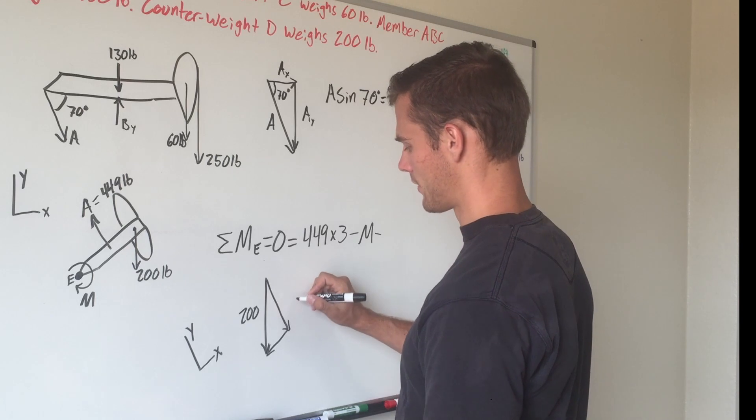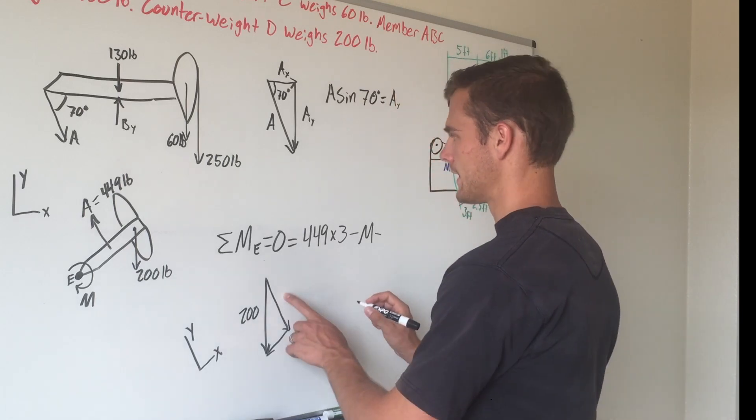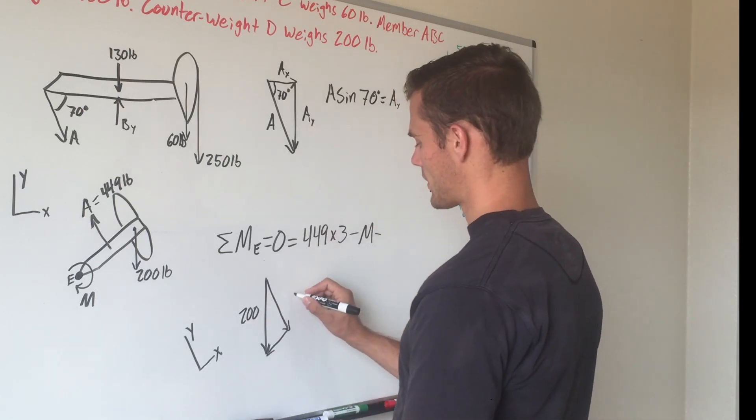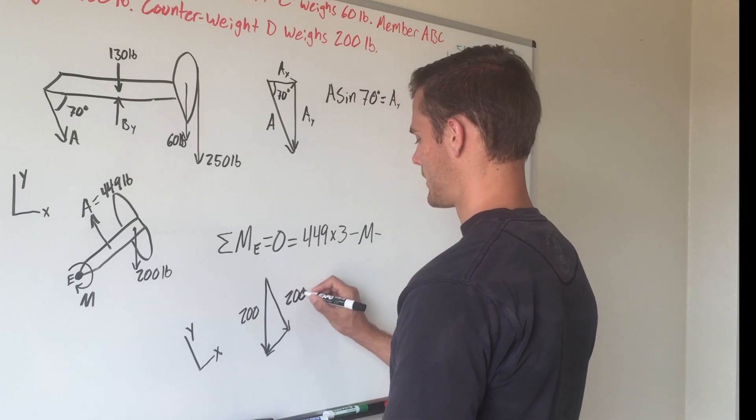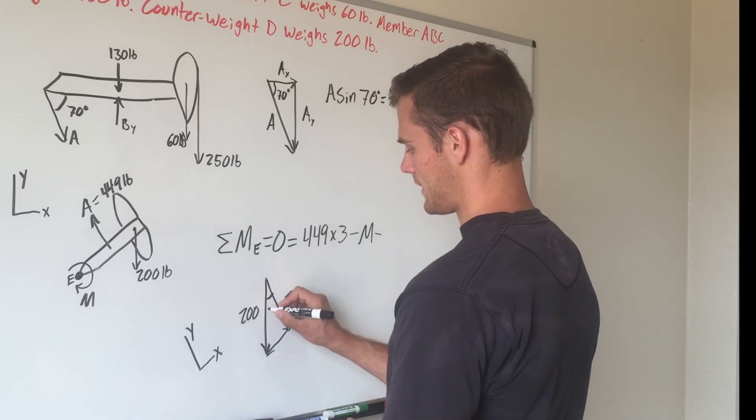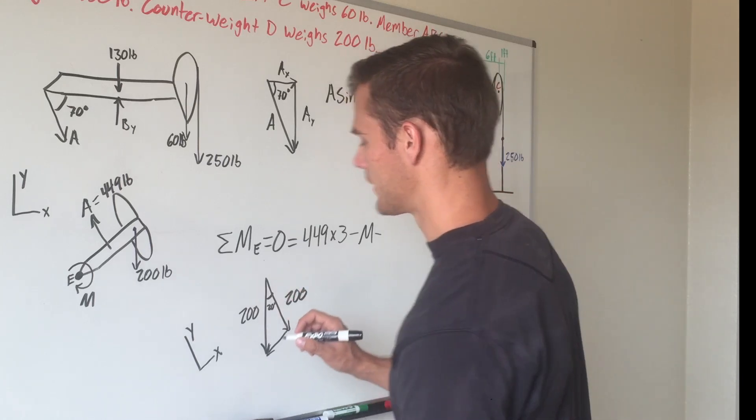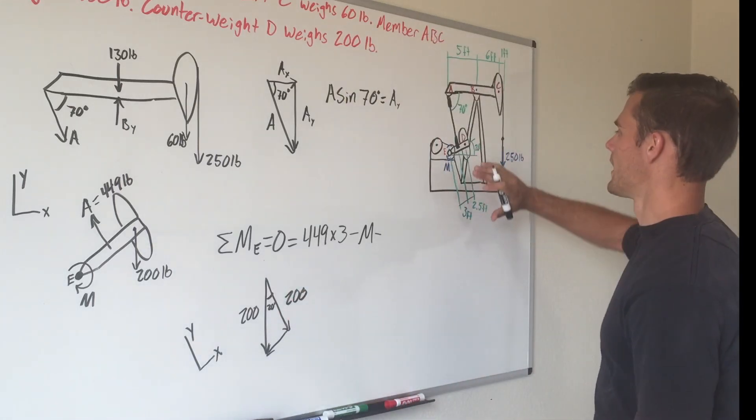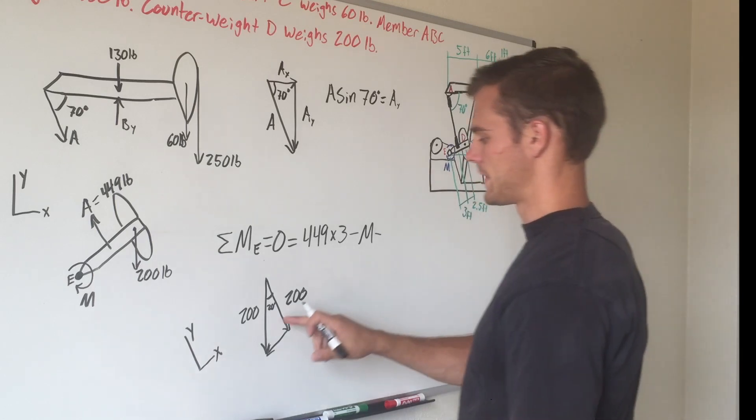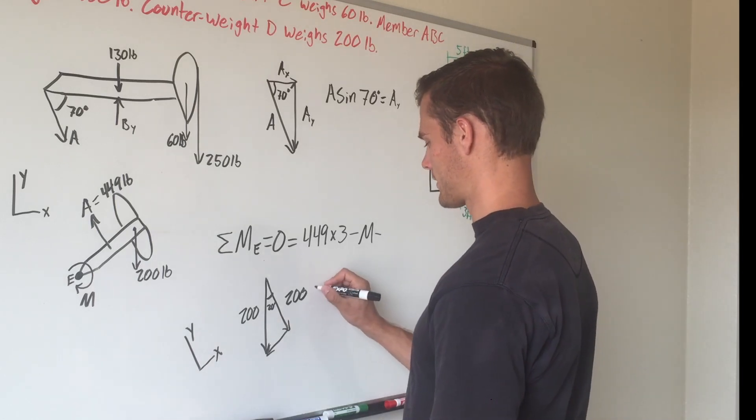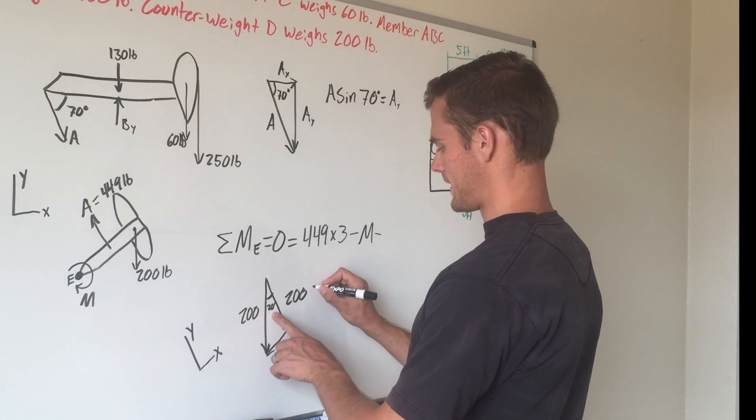To find that, it's just like we did before. So it would be 200, and this angle is 20 degrees—you have to look at the geometry of this. If you turn this 90 degrees, you'll find that makes this 20 degrees right there. To find that side, it's cosine of 20 degrees.